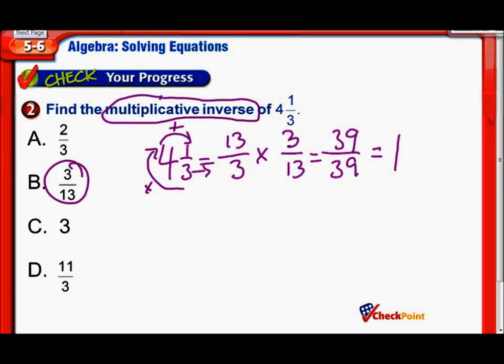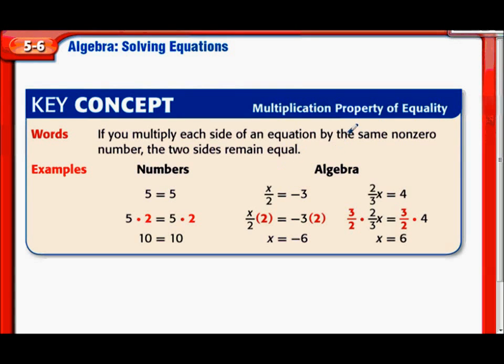The multiplication property of equality. It says if you multiply each side of an equation by the same non-zero number, the two sides remain equal. If you have 5 equals 5 and then multiply both sides by 2, it's still equal. You still have 10 on both sides. So the equation stays equal.